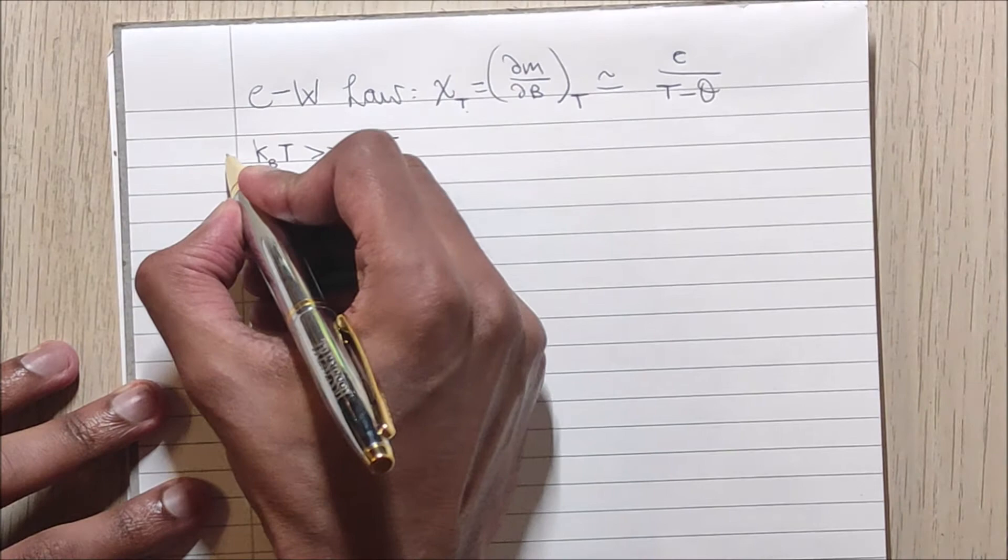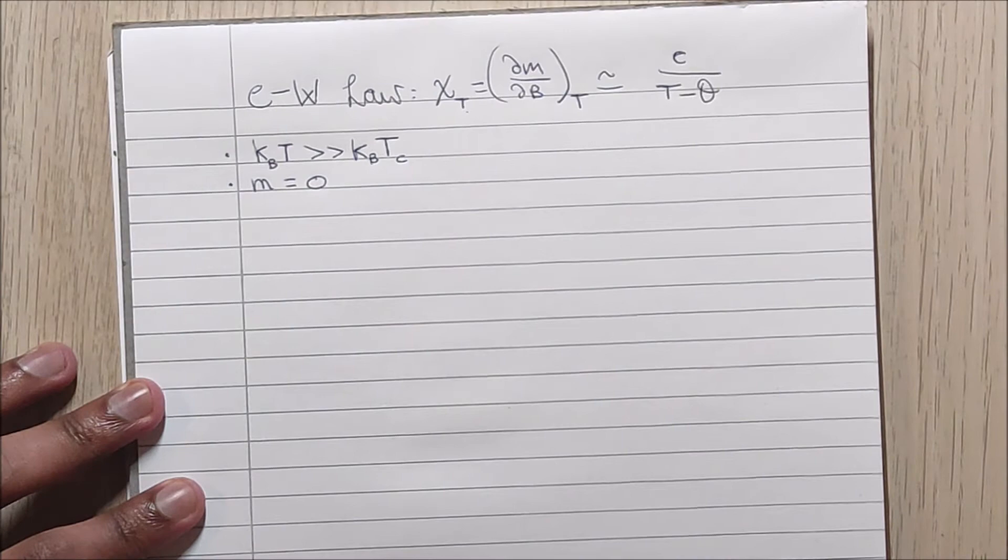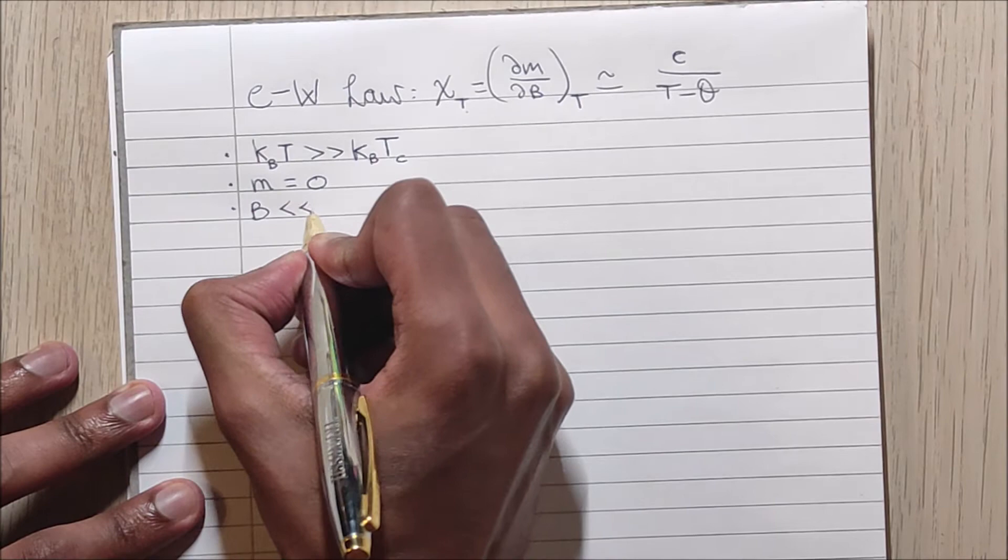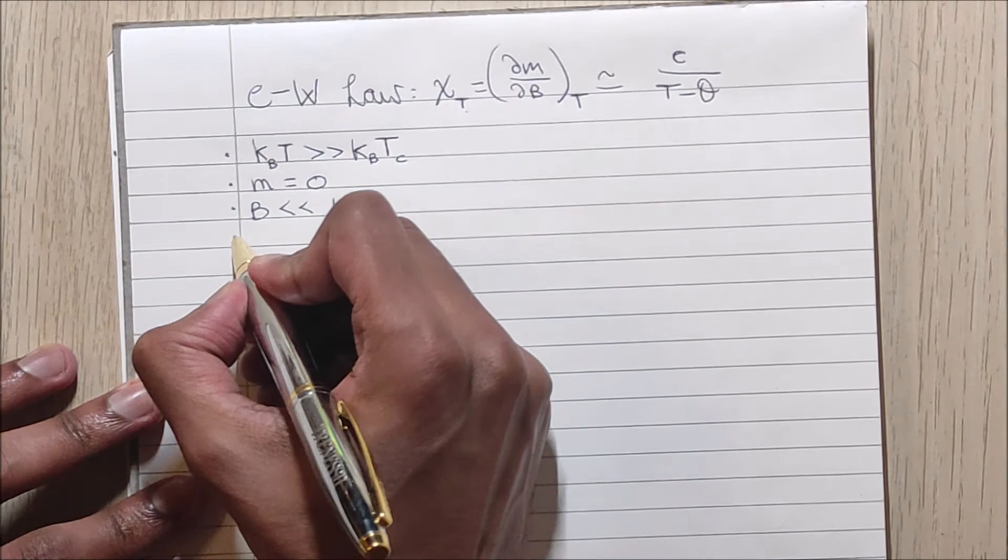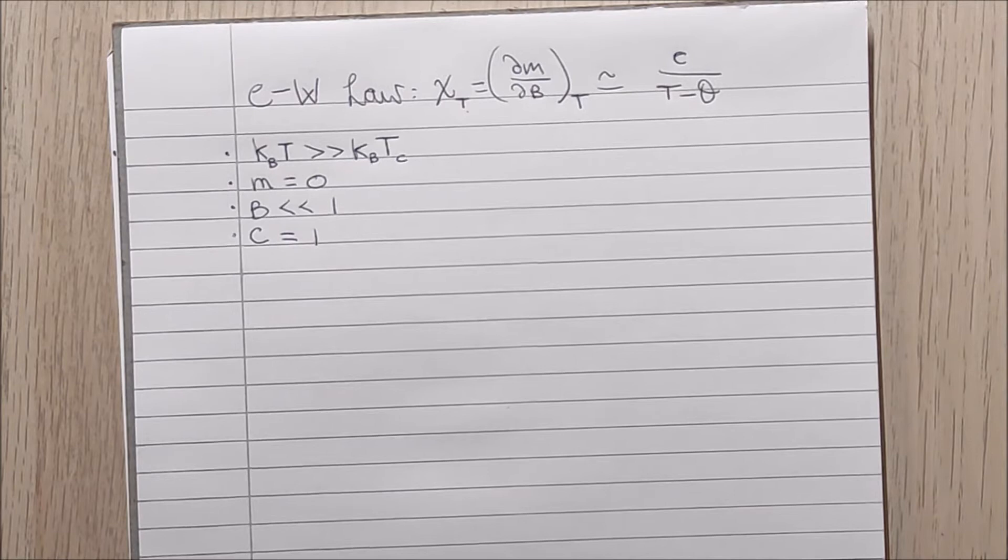We will also be taking the average magnetization of the system to be equal to zero, the external magnetic field to be very small, and the Curie constant to be equal to one.